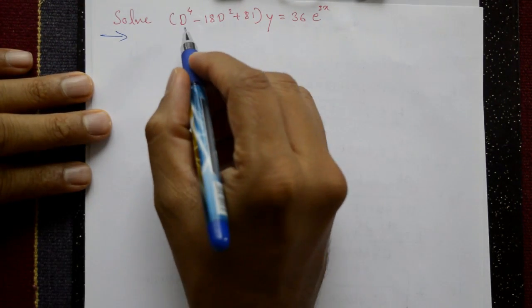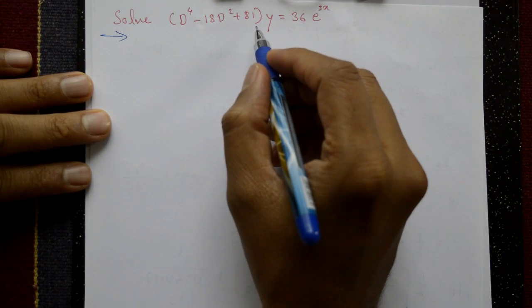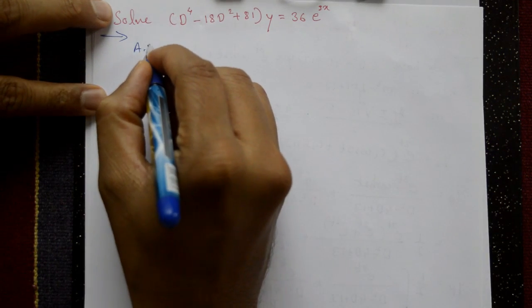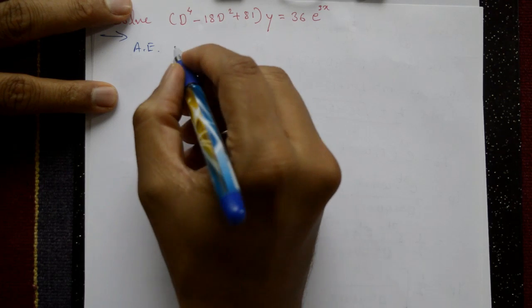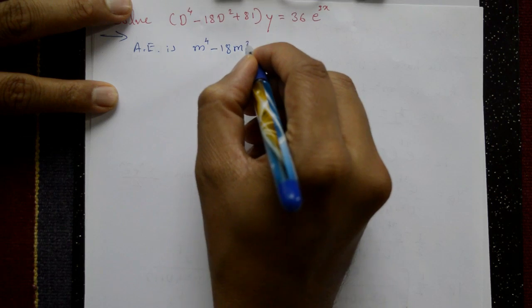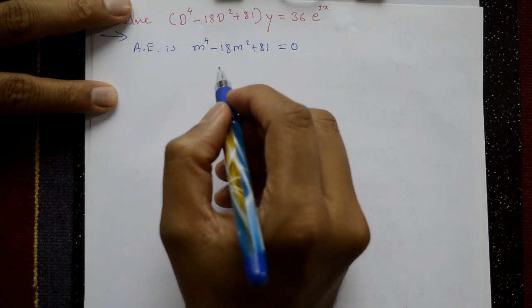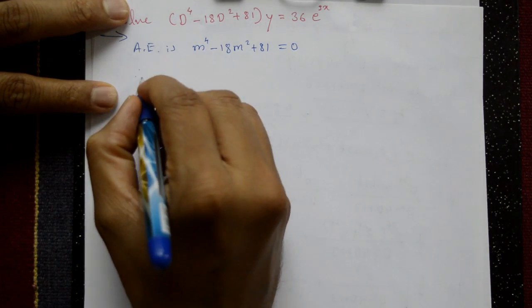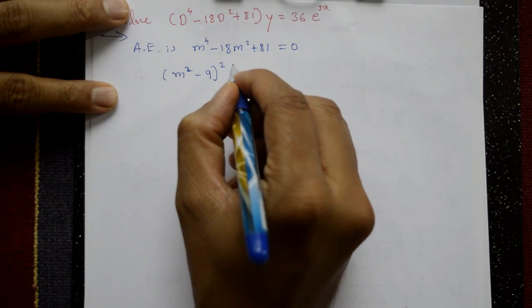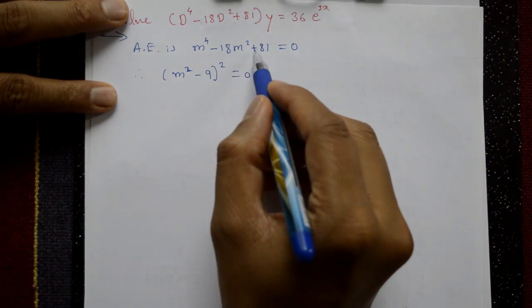Solve (D⁴ - 18D² + 81)y = 36e^(3x). To find the complete solution, first find the auxiliary equation: m⁴ - 18m² + 81 = 0. This can be written as (m² - 9)² = 0, using the identity (a - b)² = a² - 2ab + b².